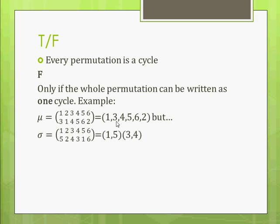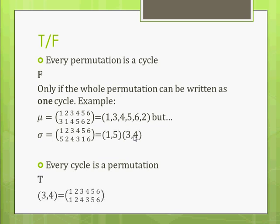But this one, we have to write this permutation as two cycles. So, it's not a cycle. It's two cycles. Every cycle is a permutation. What do you think? It's true. I'll give you an example here. 3, 4. The only thing that changes are 3 and 4. Everything else stays the same. So, we can express this as a permutation. And we can always do that. No problem.